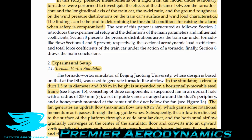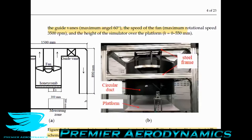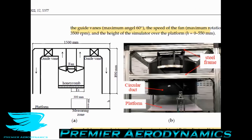In the simulator, a circular duct 1.5 meters in diameter and 0.89 meters in height is suspended on a horizontally movable steel frame. The fan in the center generates an updraft flow with a maximum flow rate of 4.8 cubic meters per second, and this gains rotational momentum as it passes through the top guiding vanes. The airflow is then redirected to the surface of the platform through a wide annular duct, and the horizontal flow gradually converges on the center of the simulated floor and converts into an upward vertical airflow. Consequently, a spiraling tornado vortex is formed between the platform and the honeycomb.